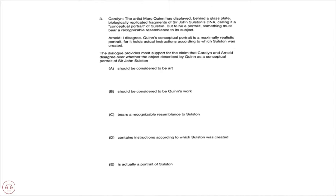Let's pause and take a look at Caroline's statement series. This is a statement of facts that clearly leads to an obvious conclusion. Her last sentence tells us that to be a portrait, something must — and 'must' introduces a necessary condition — bear a recognizable resemblance to its subject. Obviously, these biologically replicated fragments of Solstyn's DNA are not going to bear recognizable resemblance to Solstyn. Therefore, this is not a portrait. That is Caroline's point — that's what her statements obviously lead to.